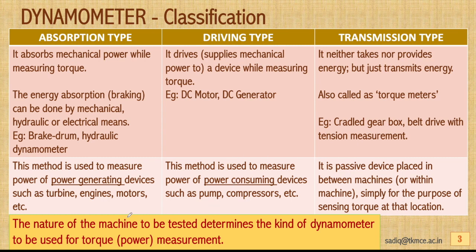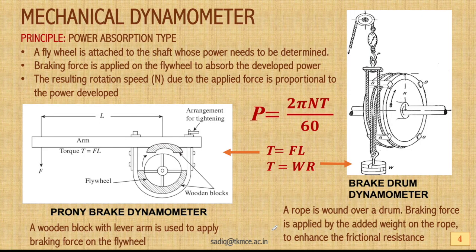From this description, we can identify that the nature of the machine to be tested determines the kind of dynamometer to be used. If it is a power-generating device, we use a power absorption type dynamometer. If it is a power-consuming device, we use a power driving type dynamometer. Now let us see the working and concept of the mechanical dynamometer.